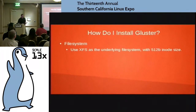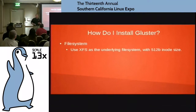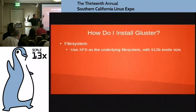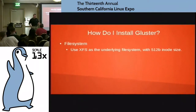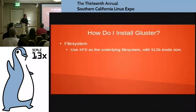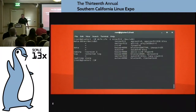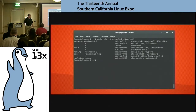Then we're going to make a file system on it. We do recommend that you use XFS. XFS is very flexible — it handles a whole lot of little files pretty well, but it also handles big files pretty well. It's the least evil of the Linux file systems when you have a really varied potential workload. We use XFS as the underlying file system with 512-byte inode size. The command is: mkfs.xfs -i size=512 and then whatever partition you're going to make.